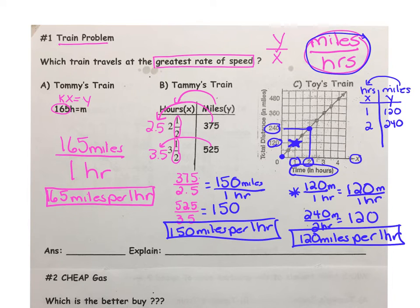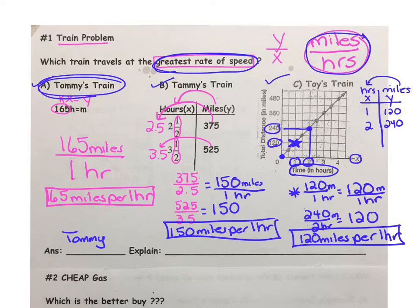So even though we've been given the information in three different ways, an equation, a table, and a graph, we can compare the rates. And clearly, Tommy's train is traveling at the greatest rate of speed. So your answer would be Tommy's train. And a written answer might sound something like this: